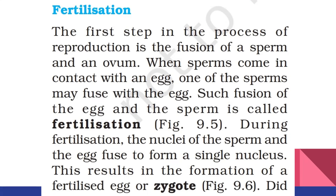So what is fertilization? The fusion of the egg and the sperm is called fertilization. During fertilization, the nuclei of the sperm and the nuclei of the egg fuse to form a single nucleus. That fertilized egg is called a zygote, and the life of the new individual begins.